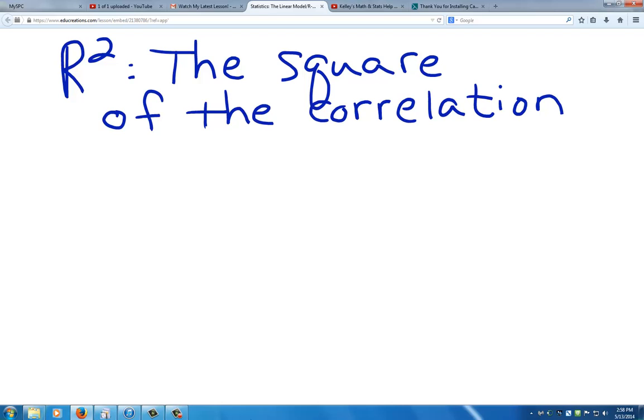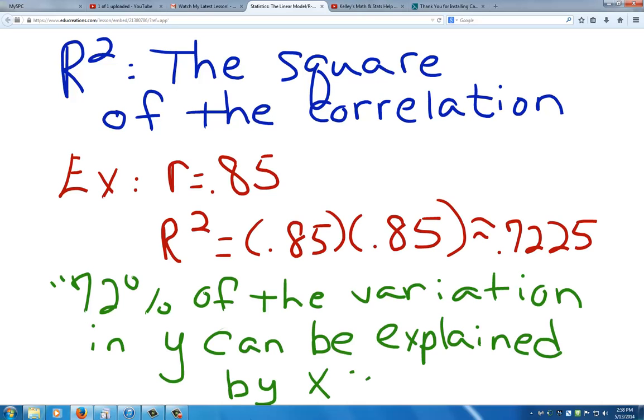r squared provides a general measure of how well the regression linearly relates y to x. Here's an example. If our correlation r is .85, our r squared value will be .85 times .85, which is equal to .7225. We would interpret this by saying approximately 72% of the variation in y can be explained by x.